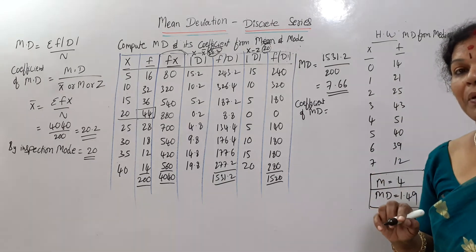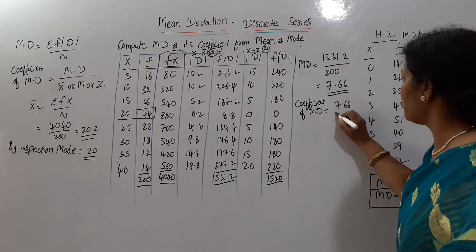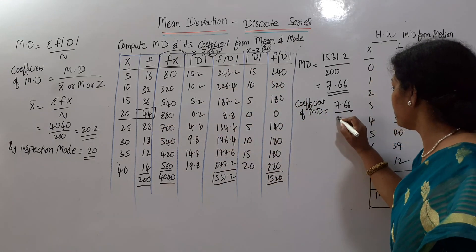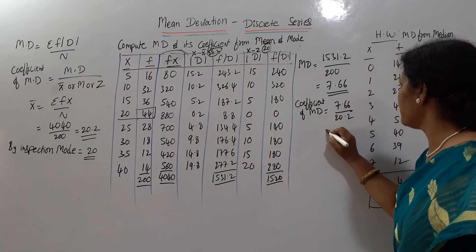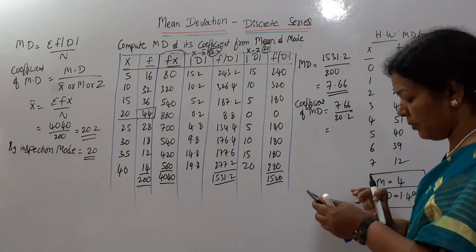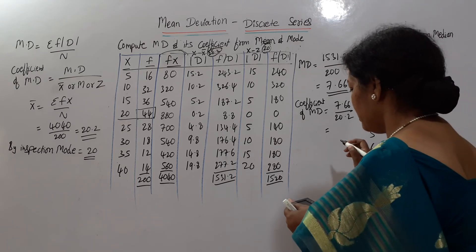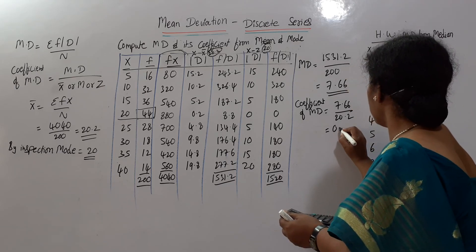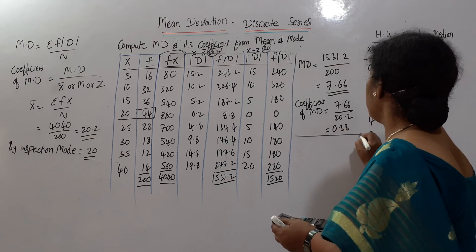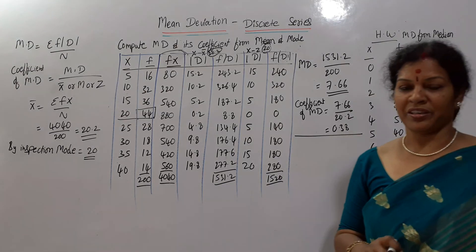Now the coefficient of mean deviation = mean deviation divided by x-bar. Mean deviation is 7.66 and x-bar is 20.2. So 7.66 divided by 20.2 = 0.38. That's the coefficient of mean deviation from mean.